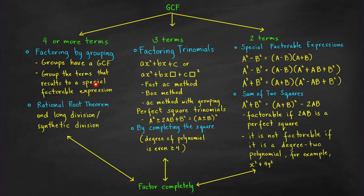When we say special factorable expression, it is like a difference of two squares, difference of two cubes, or sum of two cubes, or a form of a trinomial — like in the form ax² + bx + c, or a form of a perfect square trinomial, a² ± 2ab + b².